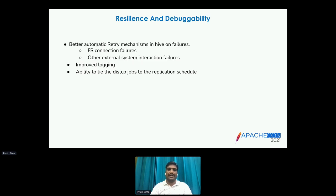For resilience and debuggability, we added exponential backoff-based retry mechanisms on failure. We tried covering all aspects where transient issues interacting with external systems could fail the replication process — instead of failing immediately, we retry. We also have improved logging and the ability to tie DistCp jobs to specific replication schedule executions.